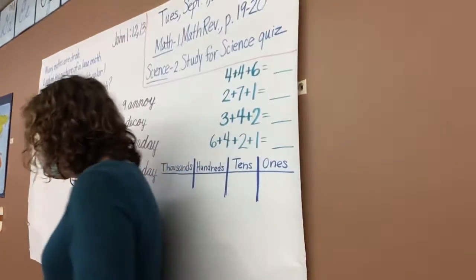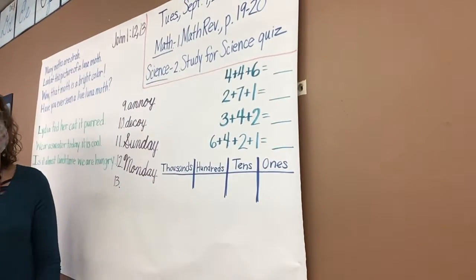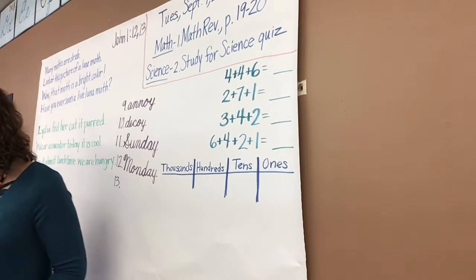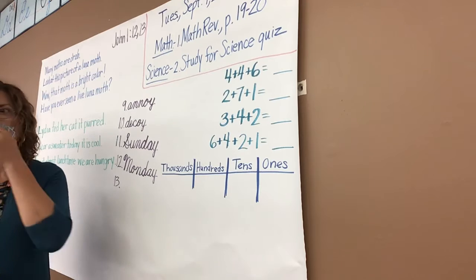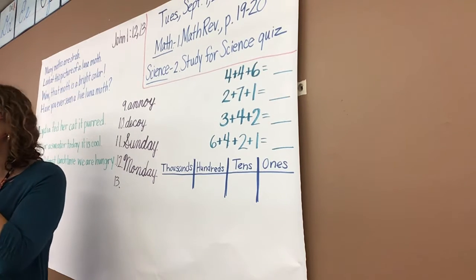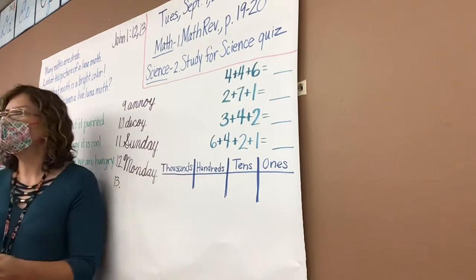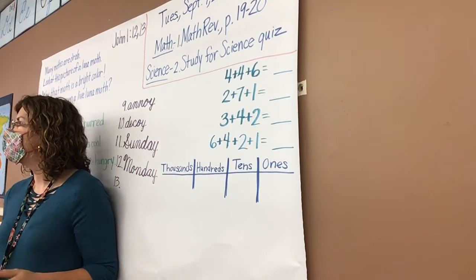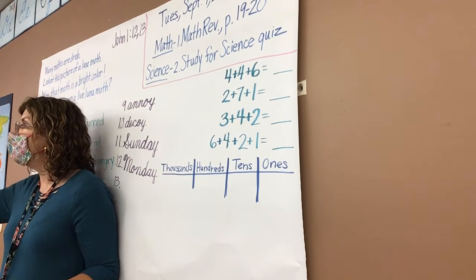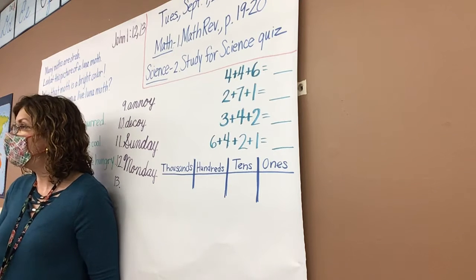The first thing I want to do today is look on the board. I have some addition facts with more than one addend. I want to talk about what strategies or properties you should have used to figure these out. Four plus four plus six — what's the first thing you should have thought of to do? We're not going to write parentheses, but we're going to do it in our mind. What's the first strategy or property that you could have used?